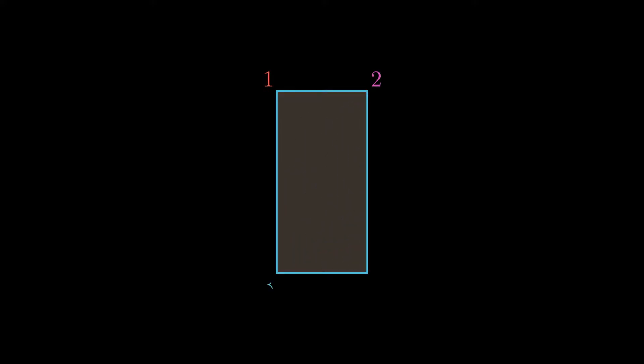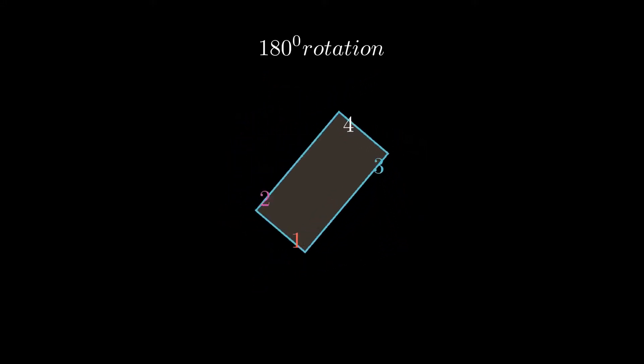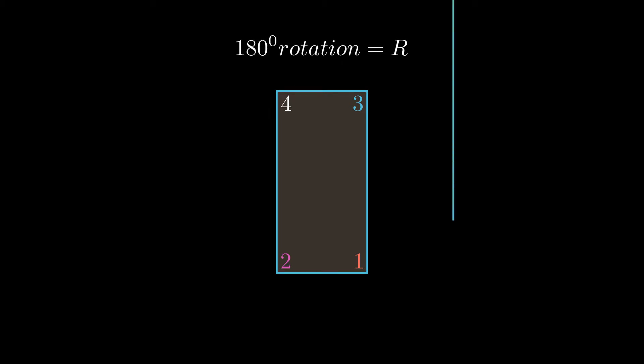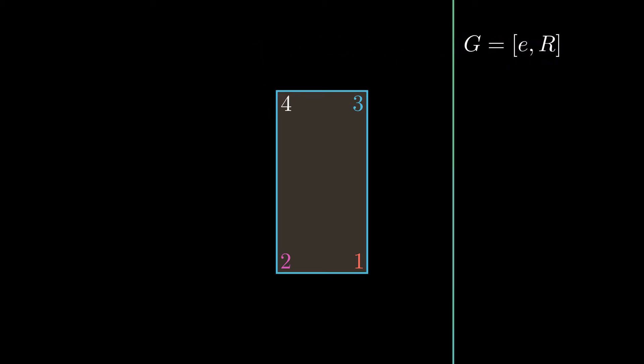I'm going to create a rectangle and mark those corners as 1, 2, 3, and 4. Now let's rotate it at 180 degrees — let's call that rotation big R. I'm going to create a set called G, and G has two elements: E and R. Here E means the identity element, which means we didn't make any changes to the rectangle, and big R is the 180-degree rotation.